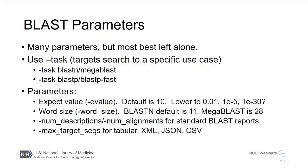If you want a lot of results to comb through and look at things in the twilight zone — where it's not clear whether a match is a real homolog or an artifact — maybe go to 0.1 or 0.01. On the other hand, if you have a pipeline with hundreds of thousands or millions of sequences and just want strong matches, you probably want a very low expect value to prevent false positives. Other parameters to consider: word size — BLASTN default is 11, meaning 11 bases must match exactly before anything happens; for MegaBLAST that's 28. You can also change the number of descriptions and alignments, max target sequences, and output format — tabular, XML, JSON.